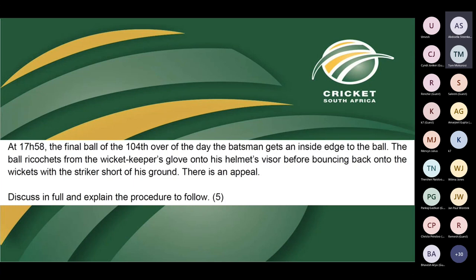Jitindra answered: the ball comes to the wicket keeper's glove, then to his own helmet visor, then bounces back onto the wicket with the striker short of ground. It's not a no ball — so the striker can be stumped. The striker was not attempting a run. The striker is out stumped. The wicket is regarded as put down by the wicket keeper if the ball rebounds off any part of the wicket keeper's person or equipment. The umpire should give the batter out stumped.